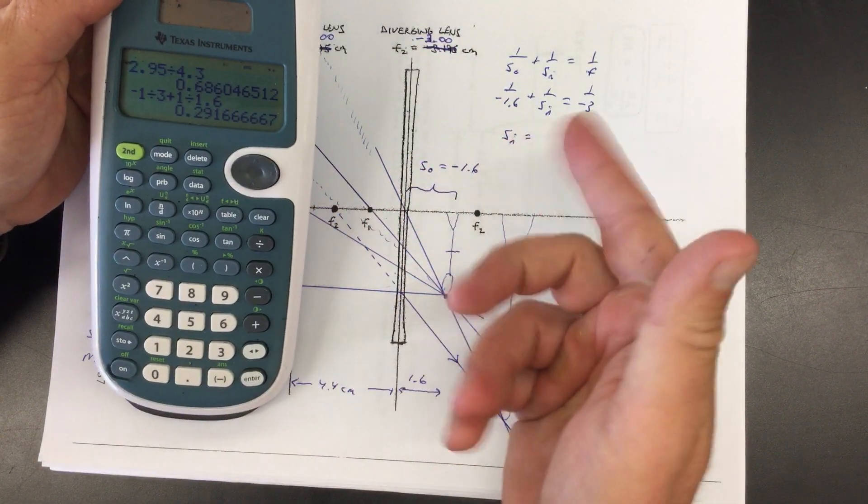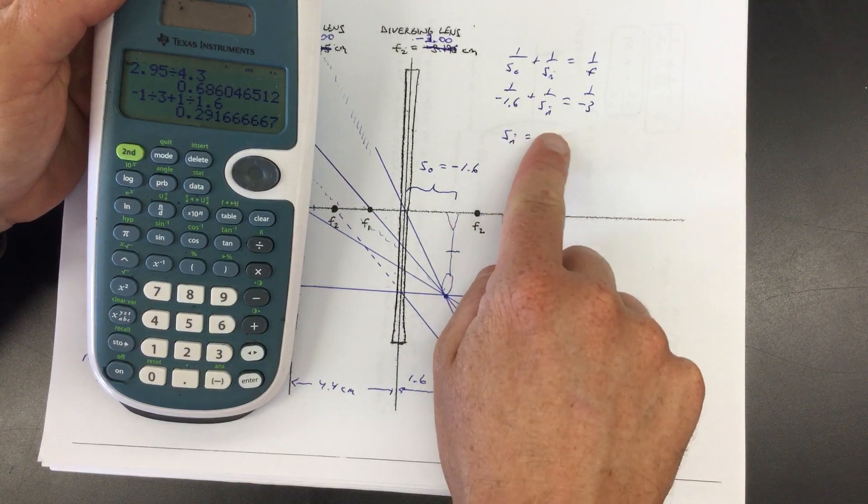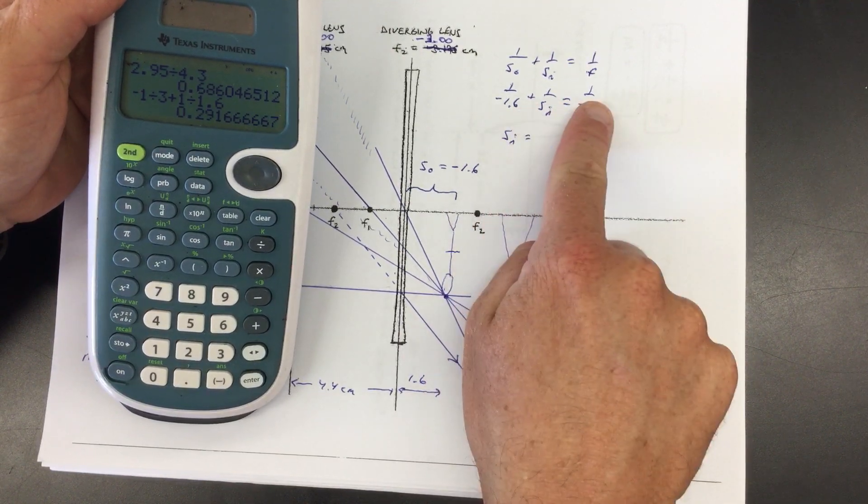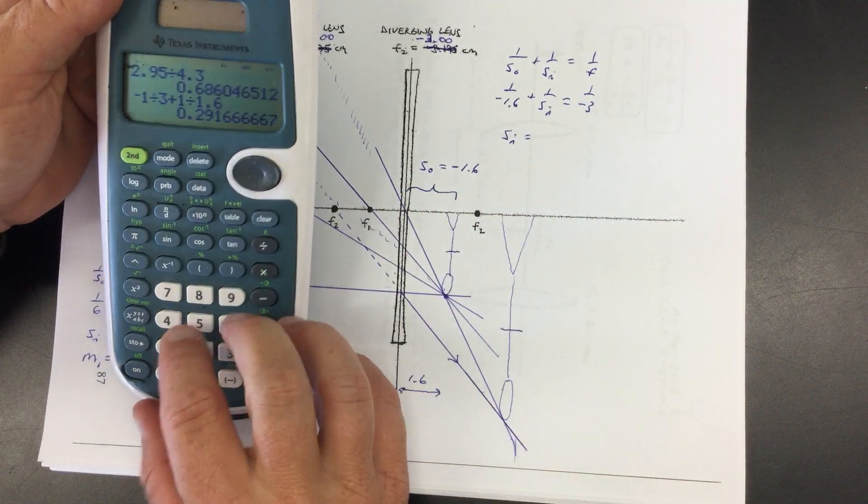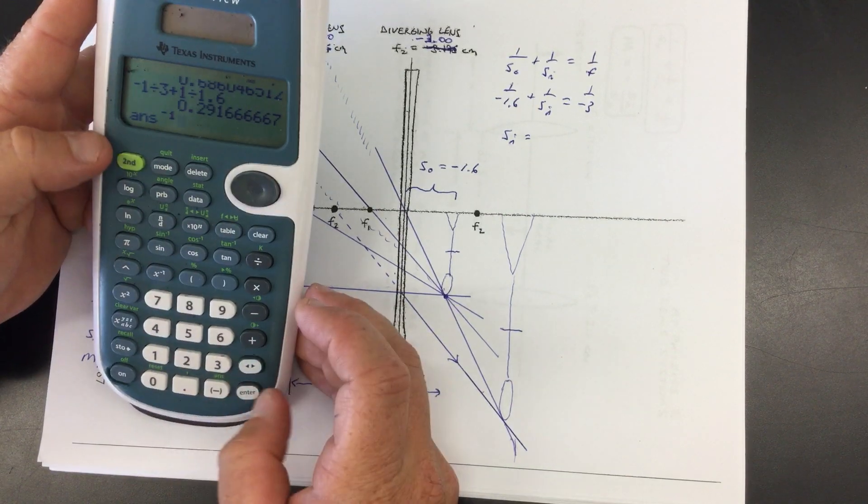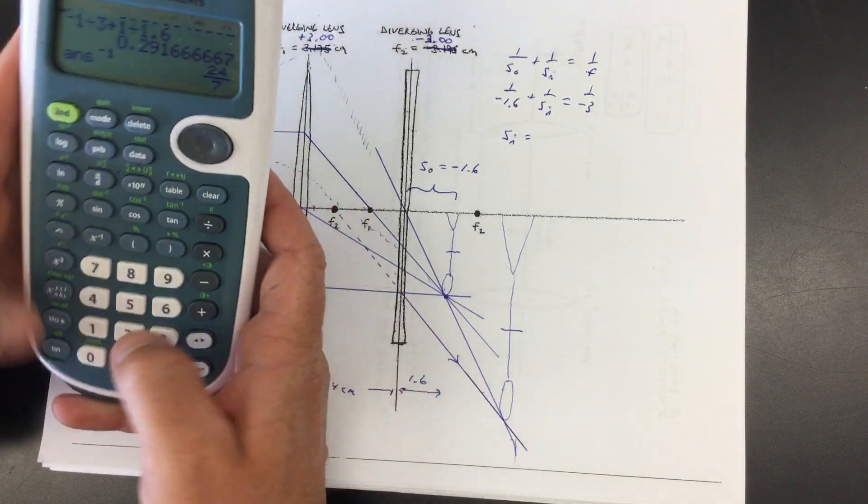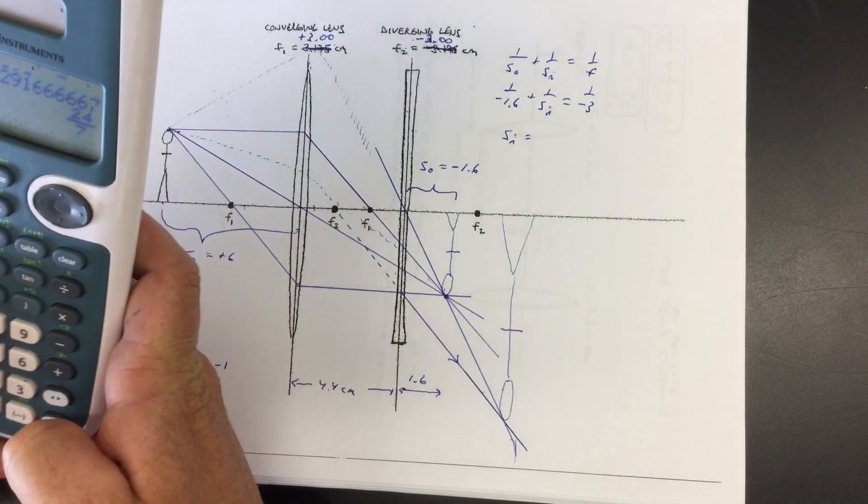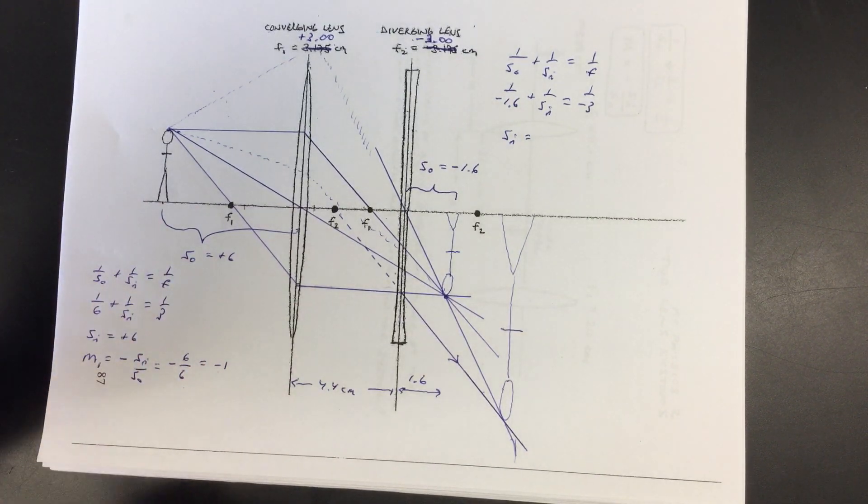You get this number 0.292, but then I got to take the reciprocal of it. Cause so far it's one over SI. So I'm going to take the reciprocal X to negative one. So we get, 24 over seven, otherwise known as 3.43.